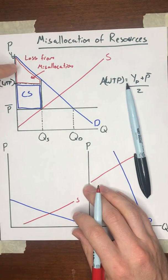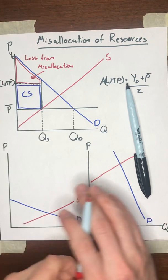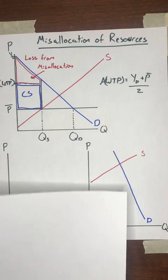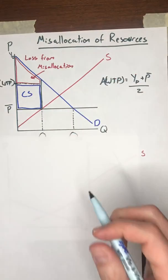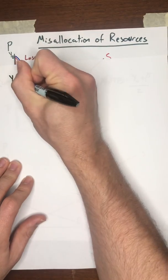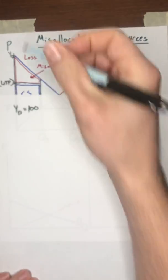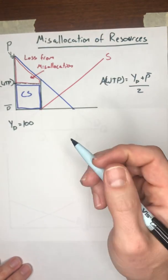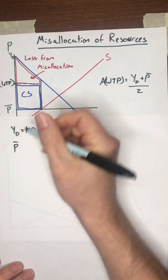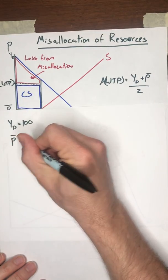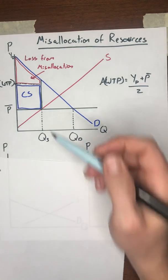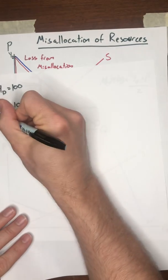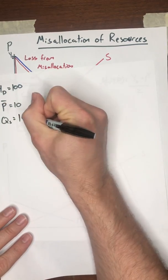Now, I'm not going to ask you to calculate the area of this shape here. But let's just go through a quick example of calculating the consumer surplus under random allocation. So let's say that we have a value of YD equal to 100. In other words, the most that any buyer would be willing to pay is $100. Let's say that the legislated price here, let's call that $10. And let's say that the quantity of units that are being sold, this QS, let's call that 100 units.